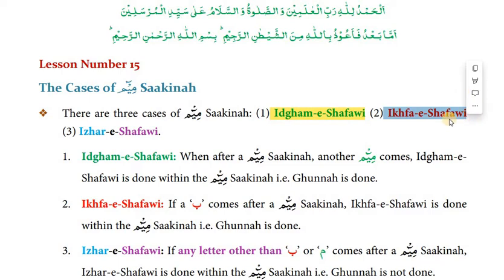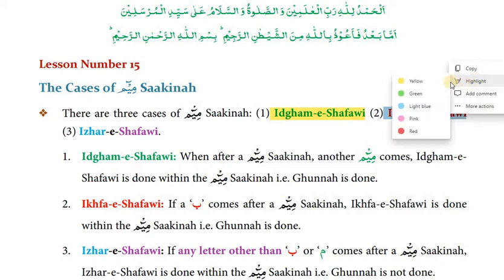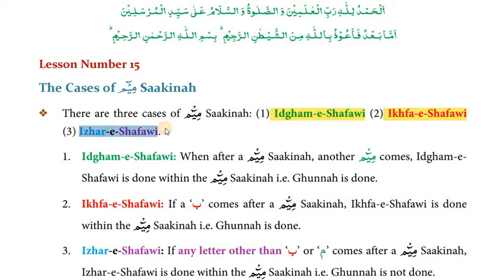The first case is Idghaam Shafawi, the second case is Ikhfa Shafawi, and the third one is Izhaar Shafawi. In the case of Noon Sakinah there are four cases: Idghaam, Izhaar, Ikhfa, and Iqlaab. But in the case of Meem Sakinah there is no Iqlaab — just Idghaam, Izhaar, and Ikhfa. There is no Iqlaab here.